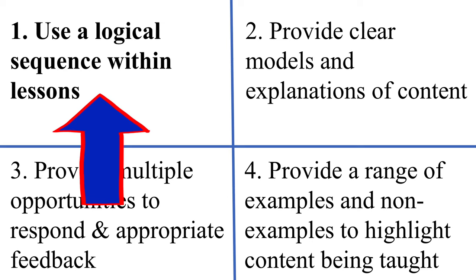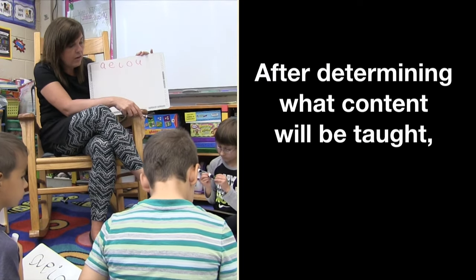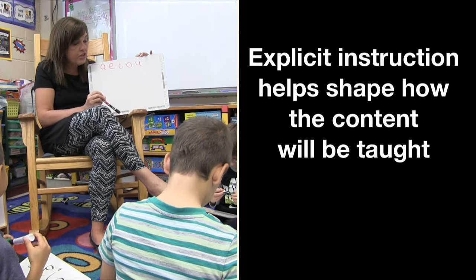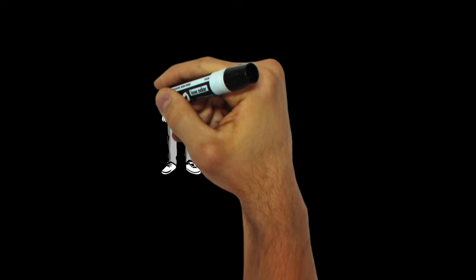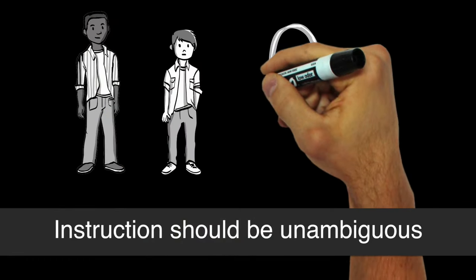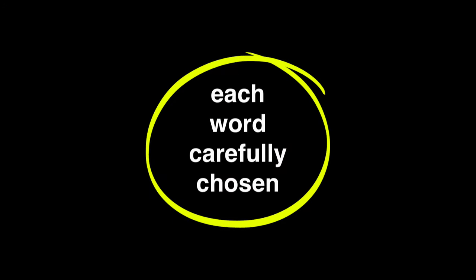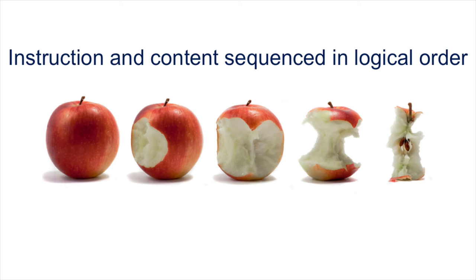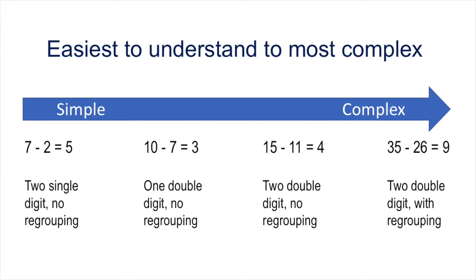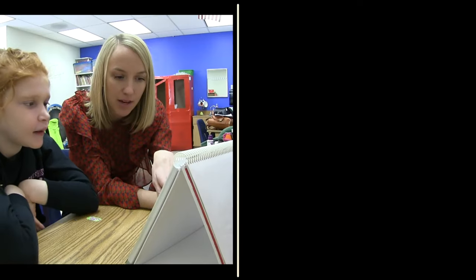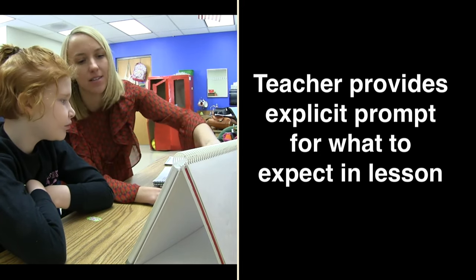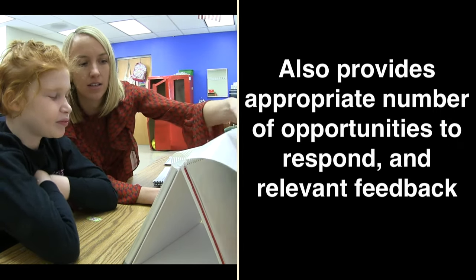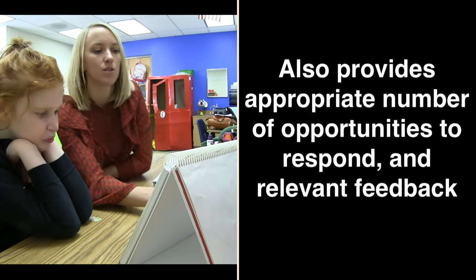Component 1: Use a logical sequence within lessons. After choosing the content, Explicit Instruction shapes how the content will be taught. Teachers should begin lessons with an explicit statement of purpose and provide an advanced organizer. Content should be sequenced logically from easiest to most complex. In the following clip from a low-incidence disability classroom, Mrs. Raines explicitly tells her student what they are going to work on during the lesson, while also providing opportunities to respond and specific feedback.